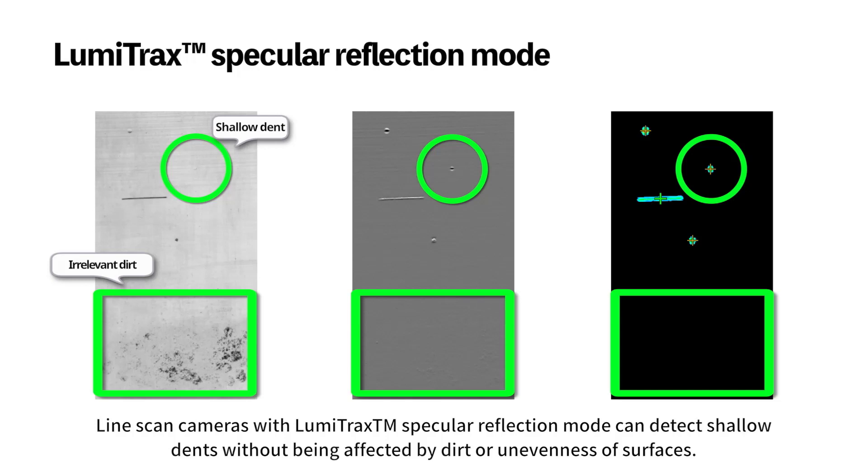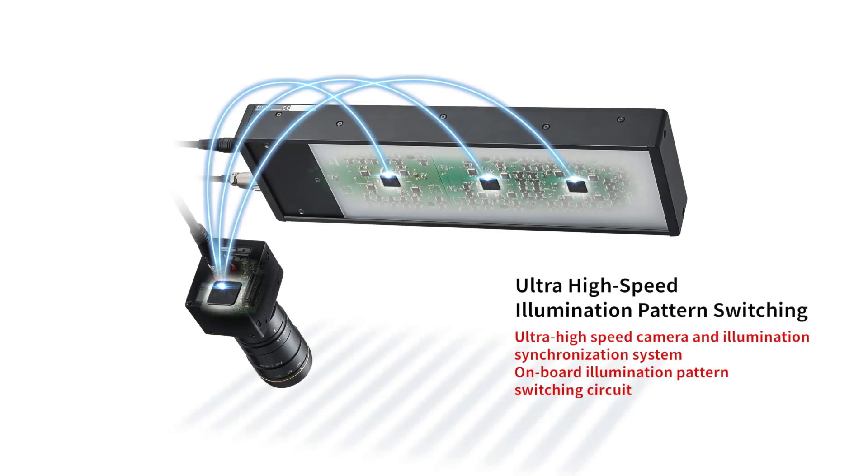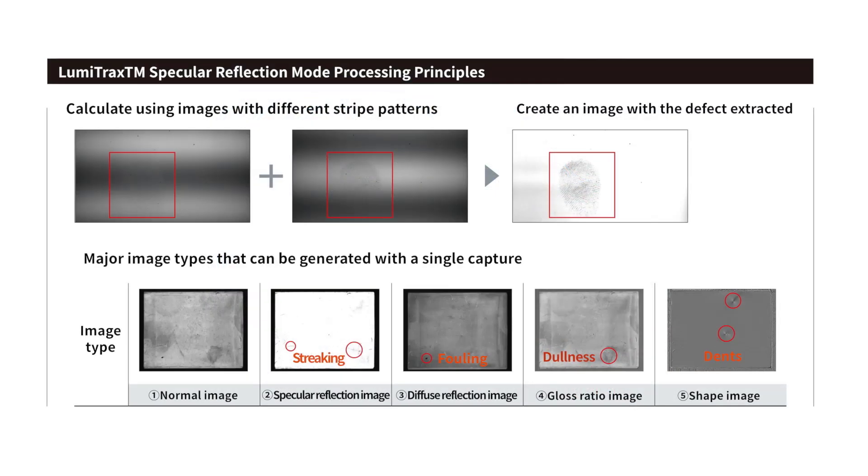This imaging is enabled through integration of the camera and lighting, where the camera and light work together at ultra-fast high speeds to capture multiple different known lighting patterns. The effects of these different patterns are analyzed to pull out differences for creation of separate images, such as the normal image, specular reflection image, diffused reflection image, gloss ratio image, and shape image.